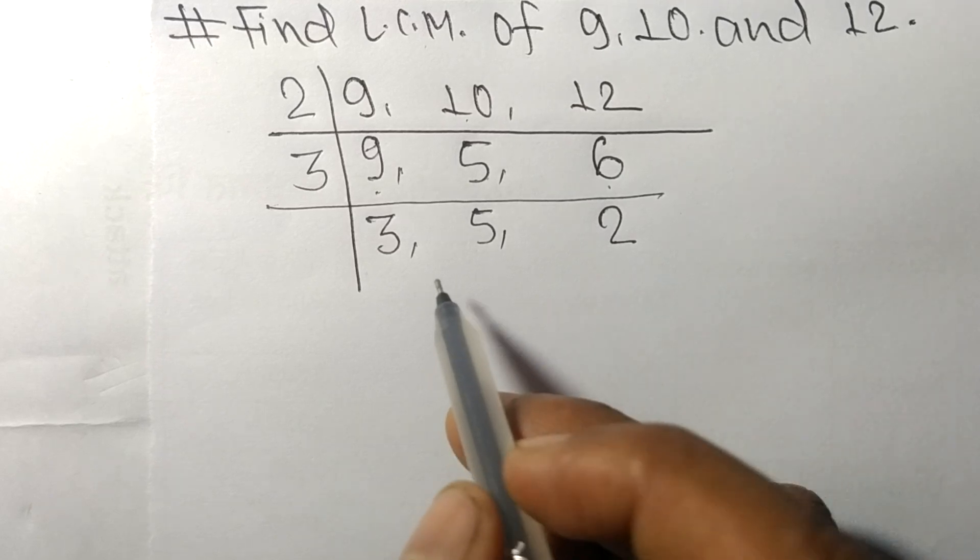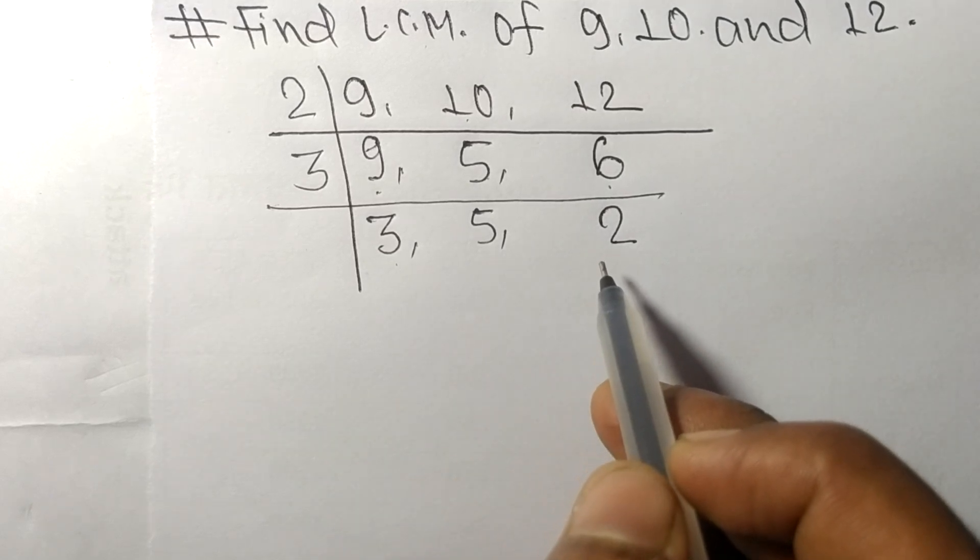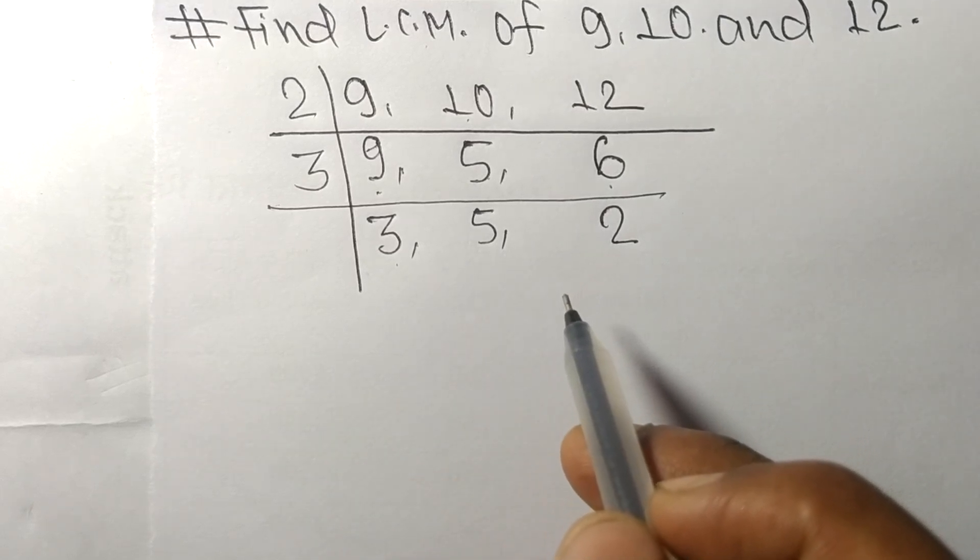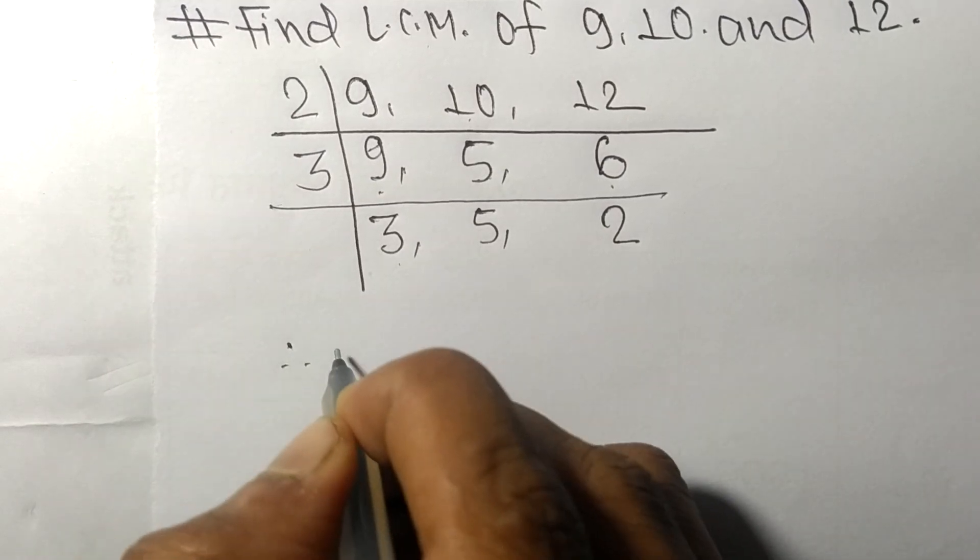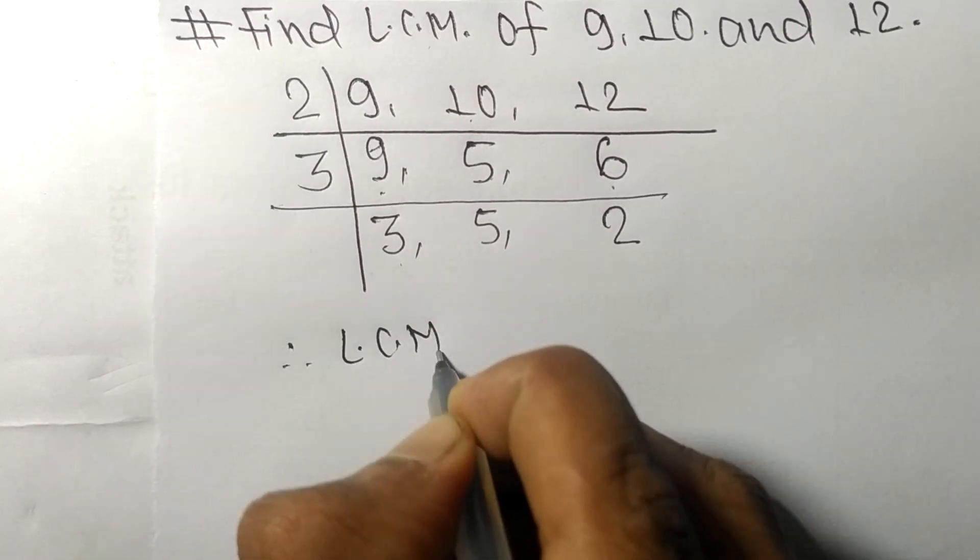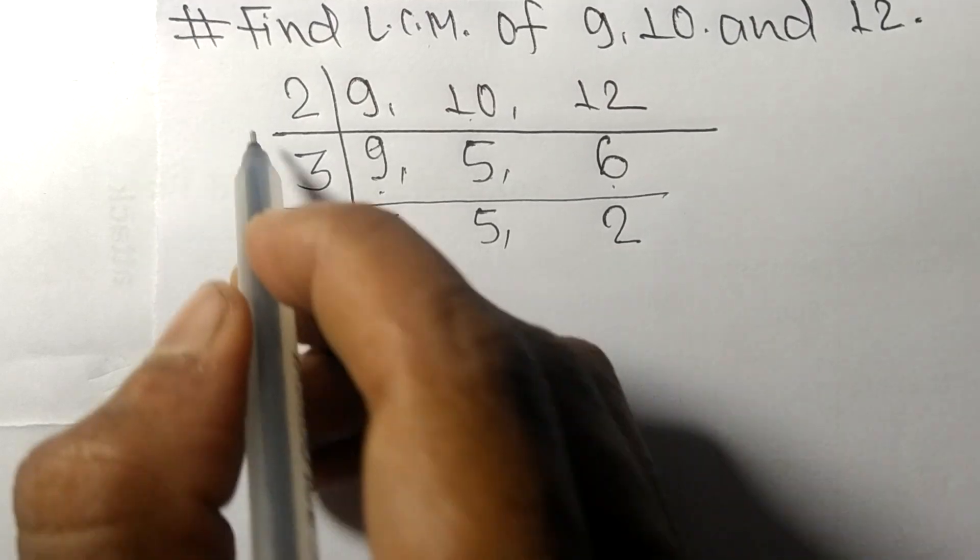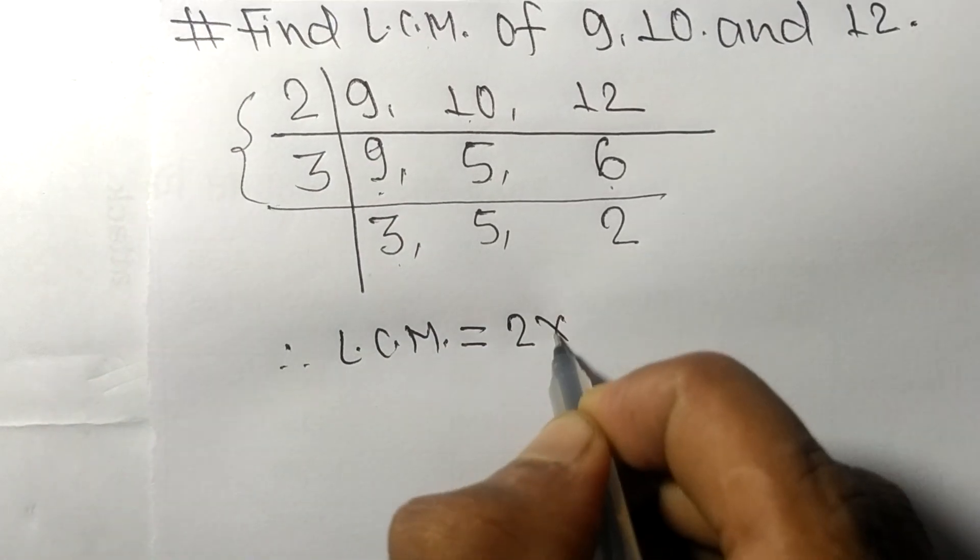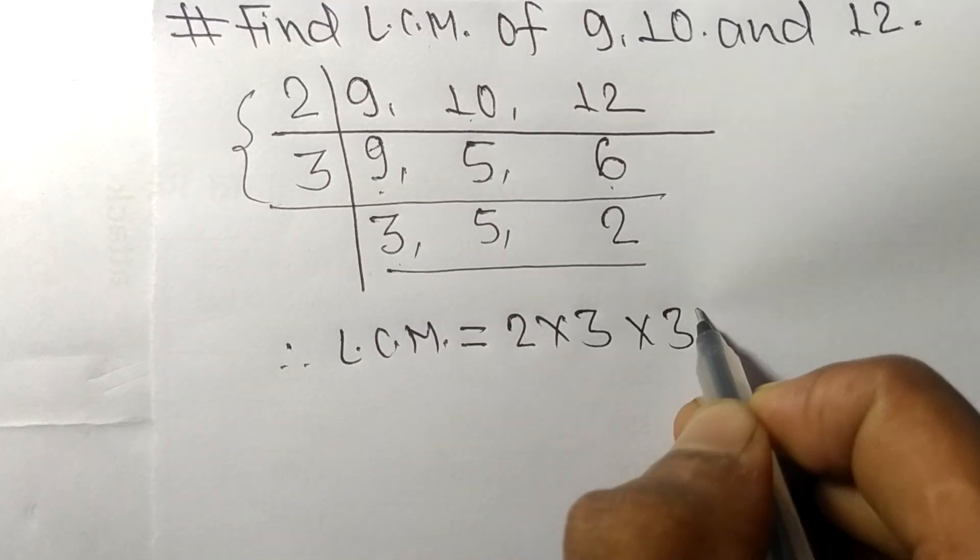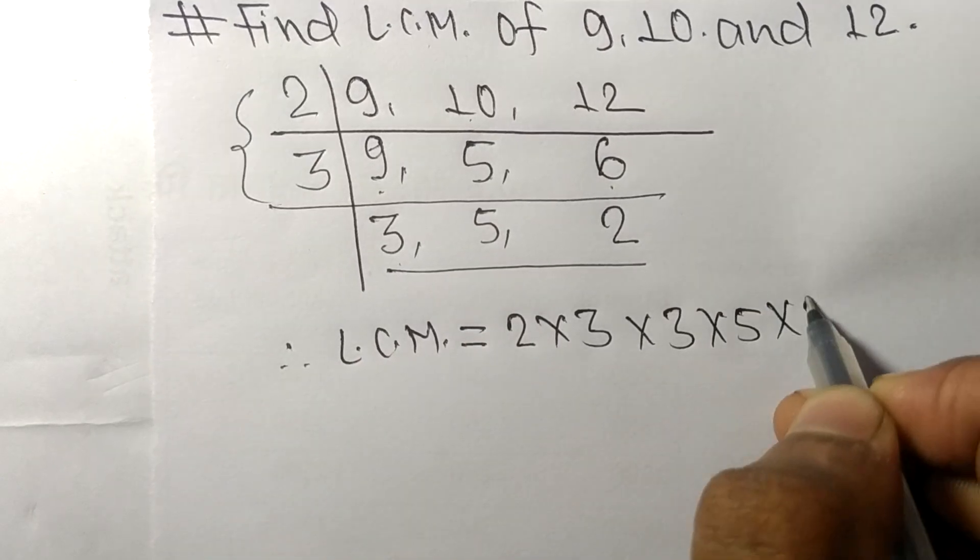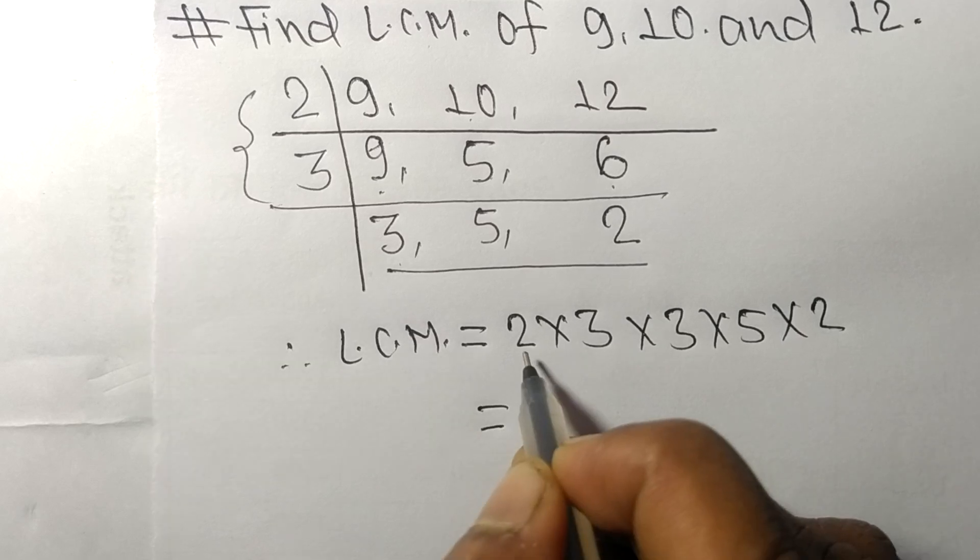Now we got 3, 5, and 2, which are not exactly divisible by the same number. Therefore, the LCM is equal to 2 times 3 from this side. We get 3, 5, and 2.